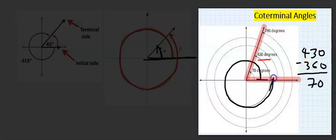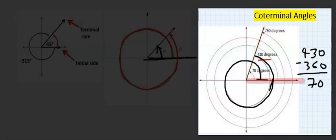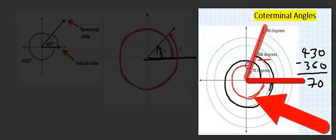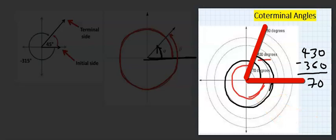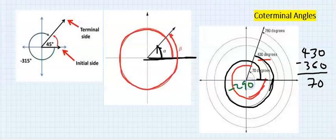When I get here, I will say 430 minus 360, and what is remaining is 70. So I will go again 70 and stop here. This angle is equivalent to starting from here and going to the line of 70 degrees. From here, this is minus 290 degrees.